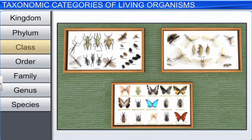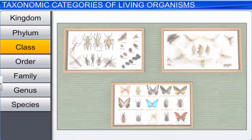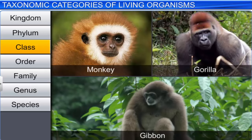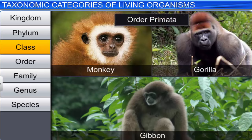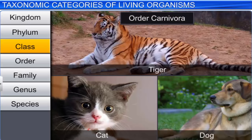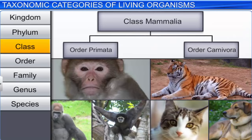The next category is Class, which consists of related orders. Consider the two orders Primata and Carnivora. Order Primata includes the monkey, the gorilla, and the gibbon. While order Carnivora includes animals like the tiger, the cat, and the dog. Although these two orders are different, they are classified under the class Mammalia.